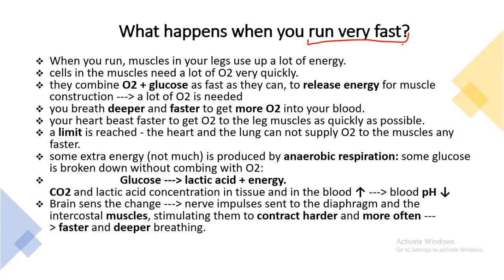What happens when you run very fast? This is a common exam question. When you run, the muscles in your legs use up a lot of energy, so the cells in the muscles need a lot of oxygen very quickly. They combine oxygen and glucose as fast as they can to release energy for muscle contraction. Due to this, a lot of oxygen is needed. To provide more oxygen, your heart starts to beat faster and your breath becomes deeper and faster so that more oxygen can be passed to the blood and quickly pumped by the heart to the leg muscles.